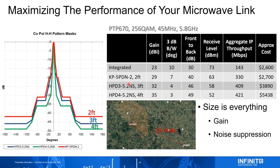Going to a larger dish also dramatically improves side lobe suppression. Interference coming in at 60 degrees off-axis sees about 30 dB attenuation from a two-foot dish, 33 dB from a three-foot, and 36 dB from a four-foot — so going from two-foot to four-foot gives an extra 6 dB of interference suppression at that angle. At angles closer to the beam, the improvement can be as much as 10 dB. The bigger antenna gets you both gain and better noise suppression for a reliable link.